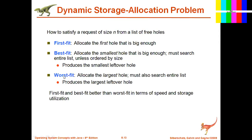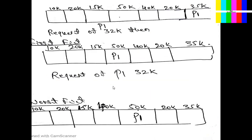Summary: In First Fit, start searching left to right — the first hole capable of satisfying the request gets allocated. In Worst Fit, search the entire list for the maximum hole capable of satisfying. In Best Fit, search the entire list for the smallest hole that can still satisfy the request — it takes more time but is the most efficient. These are the three strategies used for contiguous memory allocation to fill available holes.